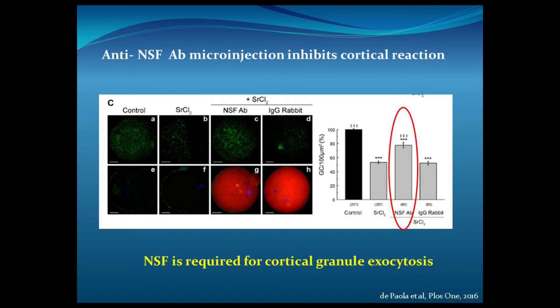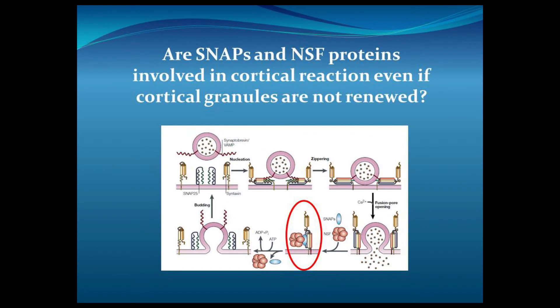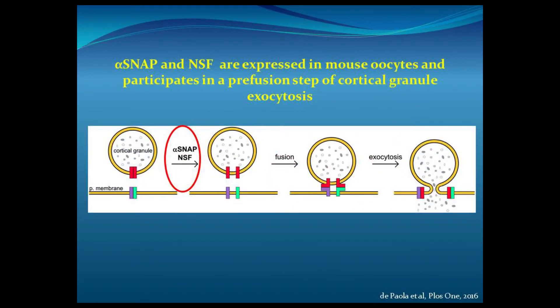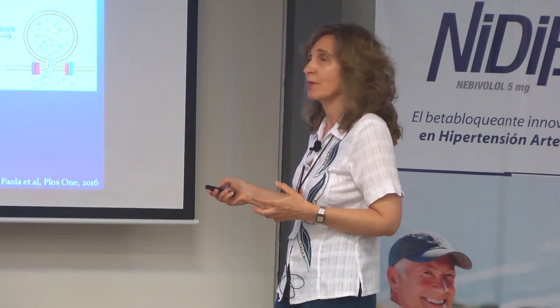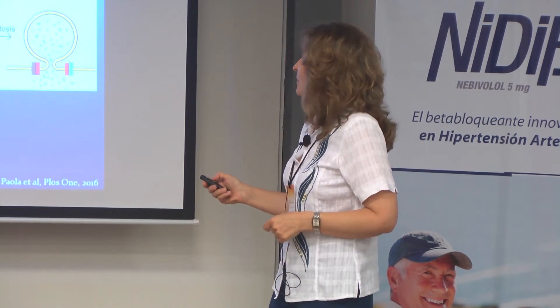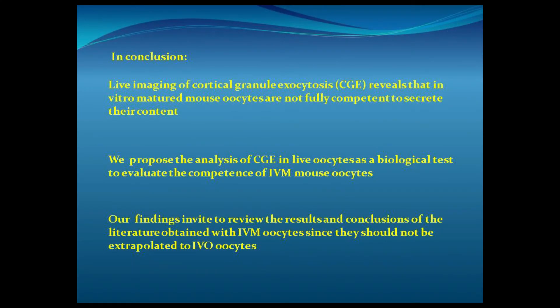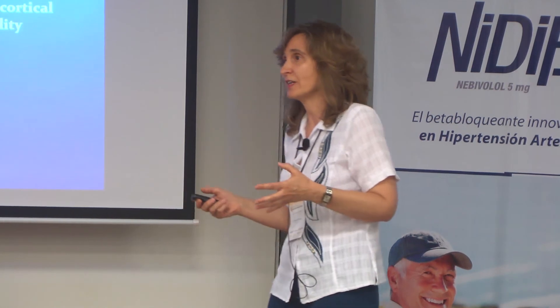This means that NSF is required for cortical granule exocytosis. Going back to the first question — are SNAP and NSF present in oocytes even when the cortical granules are not renewed? — the experiments showed that the answer is yes. But we propose a working model where this complex acts in a pre-fusion step, not in the post-fusion step like in neurons. As a conclusion, failures in the molecular mechanism of cortical reaction lead to fertility and infertility problems, so it's very important to study this process to understand how it works and whether we can design new contraception methodologies.